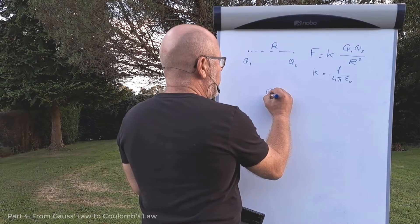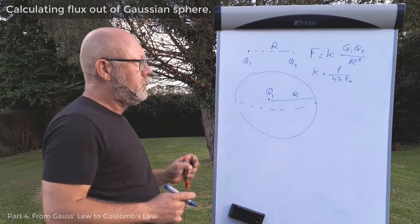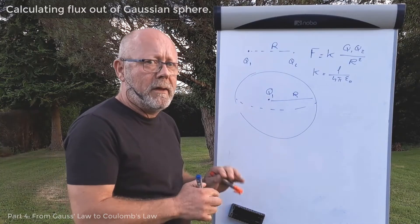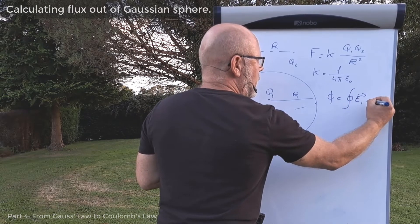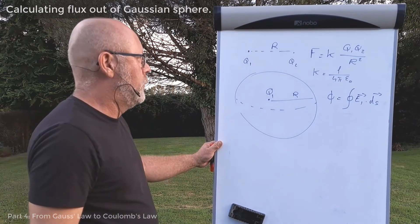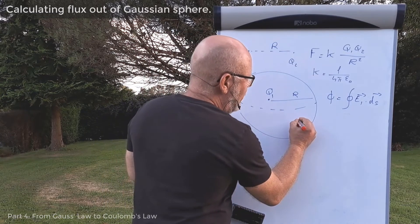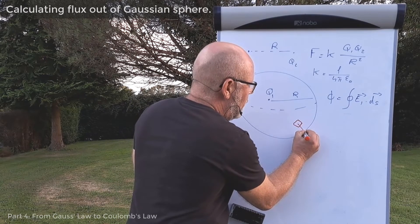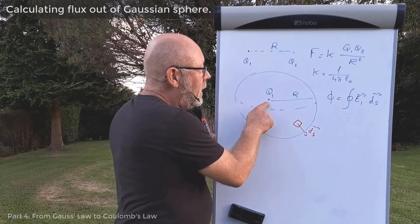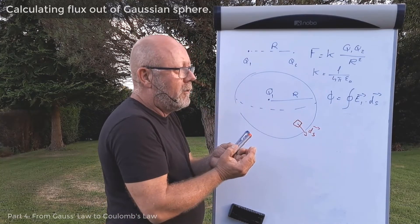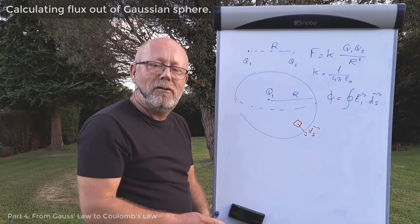I'm going to define a charge Q1 and define a Gaussian surface around that charge, which is a sphere of radius r. So what is the flux going through that surface? The flux going through that surface is the closed integral of the electric field strength vector dot-producted with a differential surface vector. First, let's calculate the dot product here. If I take a little piece of area ds here and I draw the surface vector, so ds like that, obviously ds would be perpendicular to the surface, right?